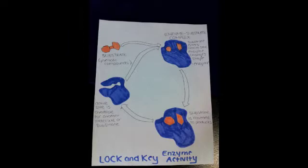Here we have the substrate, and it must fit into the enzyme, and where the substrate meets the enzyme is called the active site. The secondary, primary, and tertiary structures are responsible for the active site. After this occurs, the substrate is converted to products, and then the active site is available for another molecule or substrate.